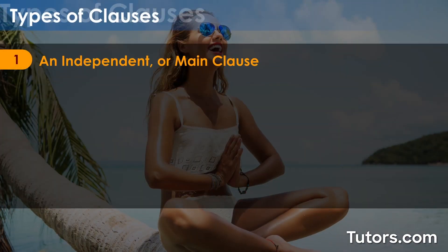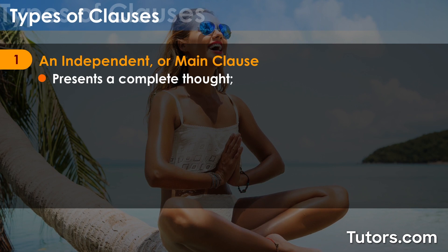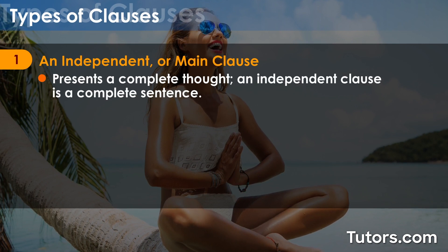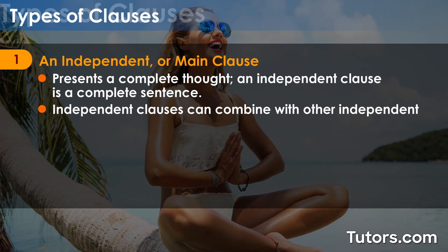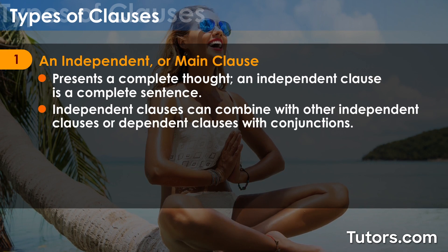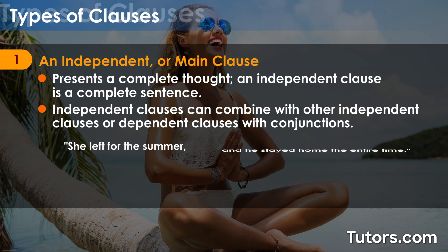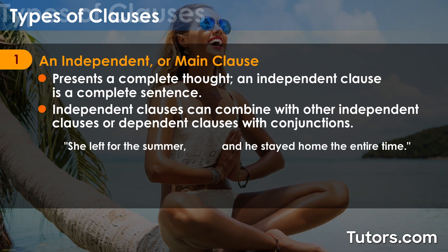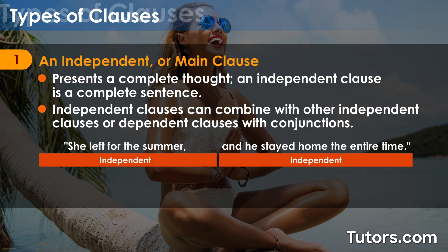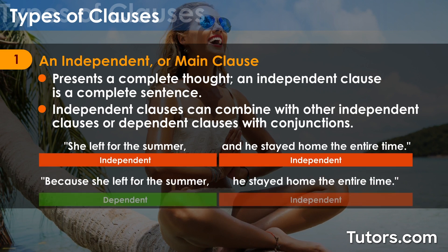An independent or main clause presents a complete thought. An independent clause is a complete sentence. Independent clauses can combine with other independent clauses or dependent clauses with conjunctions. For example, "She left for the summer, and he stayed home" combines two independent clauses into one sentence.